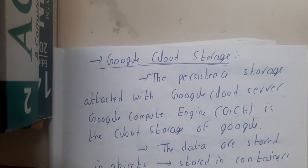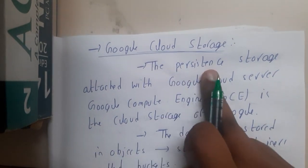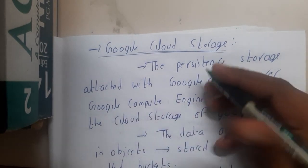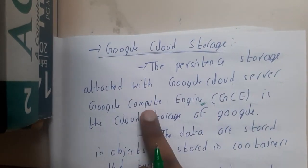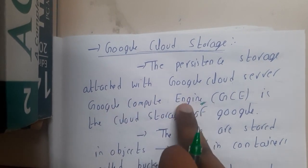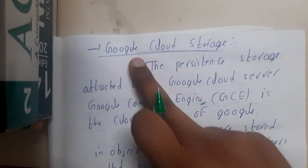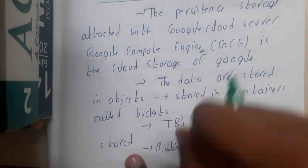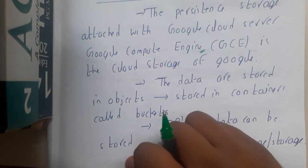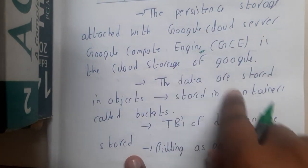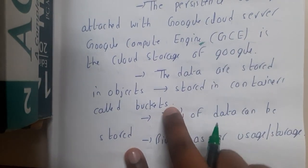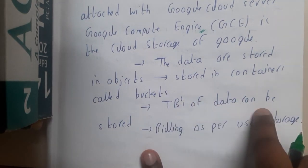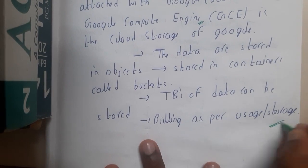The third storage is Google Cloud Storage, which is persistent storage attached to Google's cloud server, known as Google Compute Engine. If you want storage for Google Compute Engine, you use Google Cloud Storage. Here the data is also stored in terms of objects, and these objects are stored in containers called buckets. You can store gigabytes or terabytes of data.